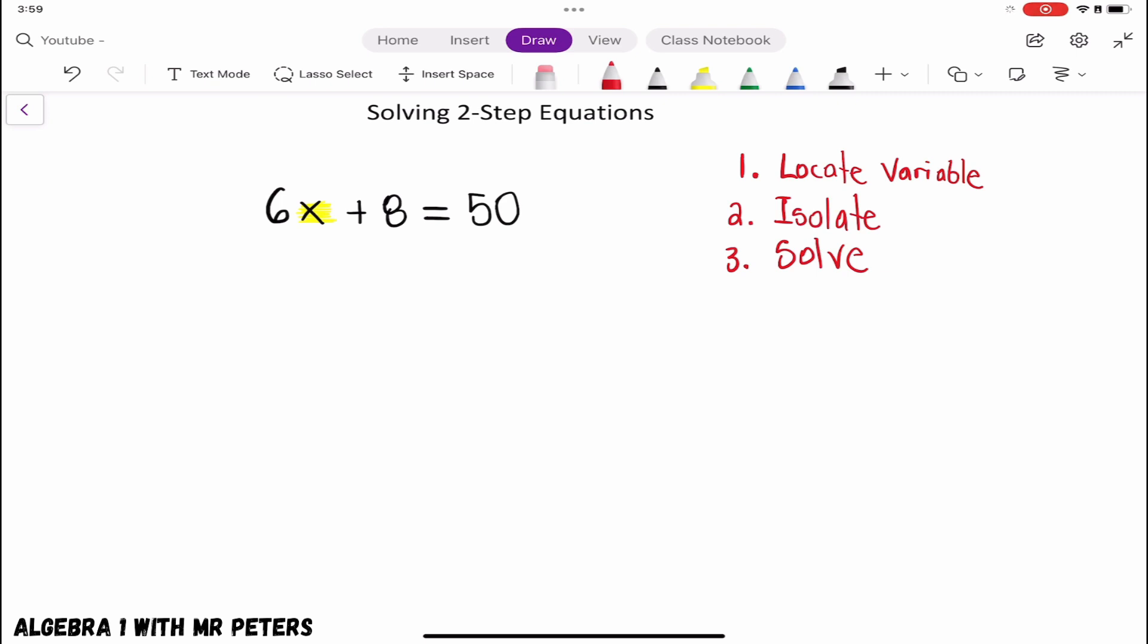So the first thing I understand, I located my variable x. And what they're saying in this problem is that we're going to multiply 6 and x, add 8, and we should get an answer of 50. So if we want to have this 6x by itself on one side of the equal sign, the first thing we probably need to do is focus on moving 8 to the other side.